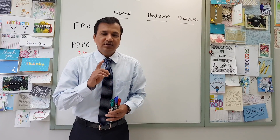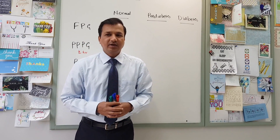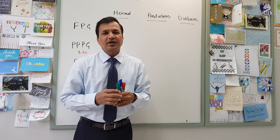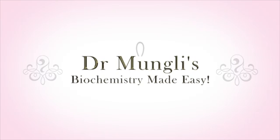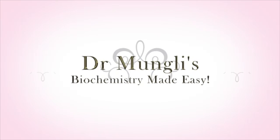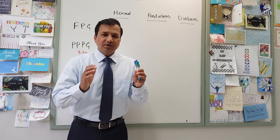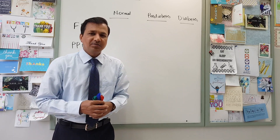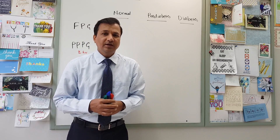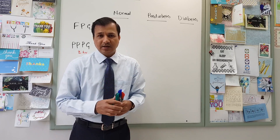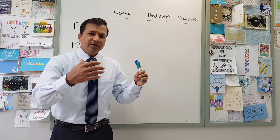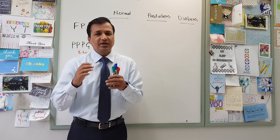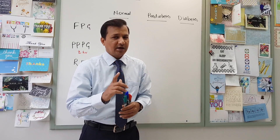Hey everyone, Dr. Mungle here. In this video, I will be explaining how to diagnose diabetes mellitus and pre-diabetes based on the different types of blood glucose tests we do. The numbers I am giving here are all from the American Diabetes Association criteria, modified in 2014 for the diagnosis of diabetes and pre-diabetes. I will cover the normal range, then pre-diabetes, and then diabetes mellitus.